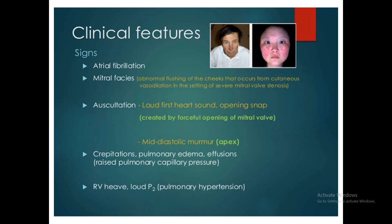The clinical features include atrial fibrillation with irregularly irregular pulse and pulse deficit. Mitral facies — malar flushing on the cheeks — occurs from cutaneous vasodilatation due to redistribution of blood. On auscultation, there is a loud first heart sound because the fibrous valve closes loudly, followed by an opening snap, which is created by the forceful opening of the mitral valve, followed by a mid-diastolic murmur.